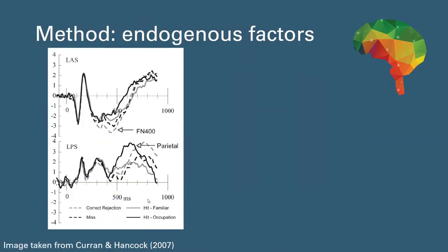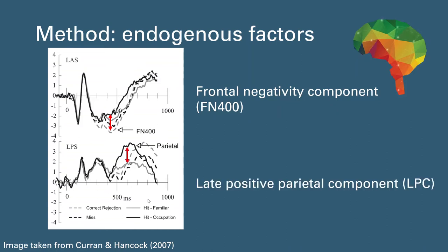For the endogenous factors, two EEG components have been most extensively studied that track recognition memory performance. The first component occurred earlier at frontal regions, called frontal negativity component or FN400, and the second component occurred later at parietal sites, termed positive parietal component or LPC. These components have been found to reliably differ between hit and correct rejection conditions, which suggests their involvement in the memory process leading to successful recognition.